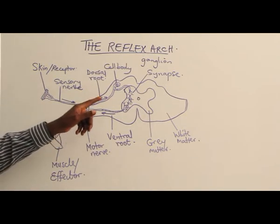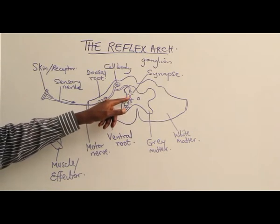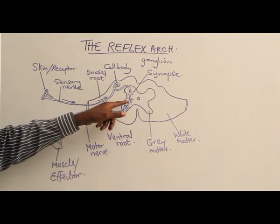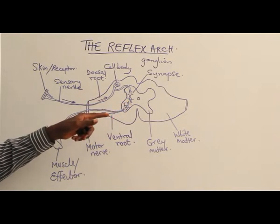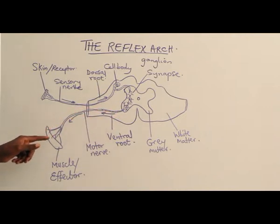And cause impulses to be transmitted from relay neurons, relay nerves to motor nerve. The motor nerve picks up the message, which is now in the form of impulse, and transmits it down to the effector, which is the muscle of the fingers.